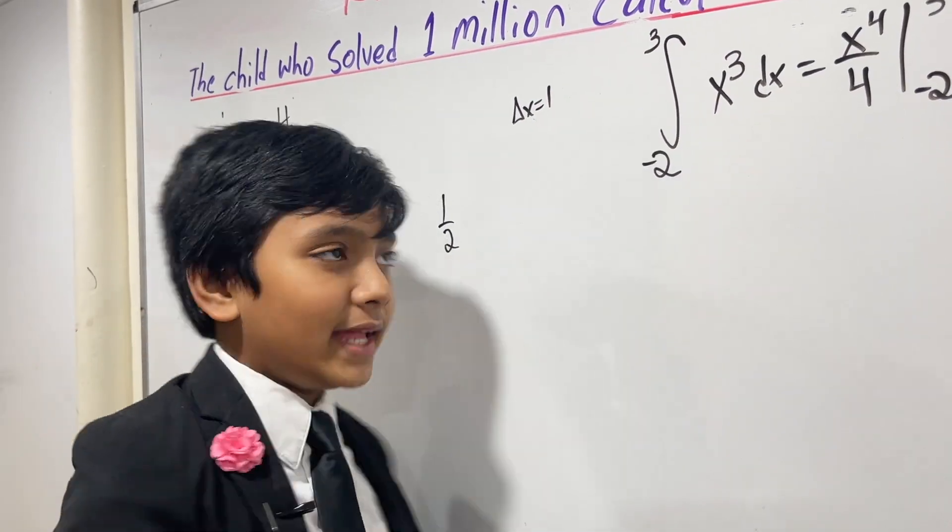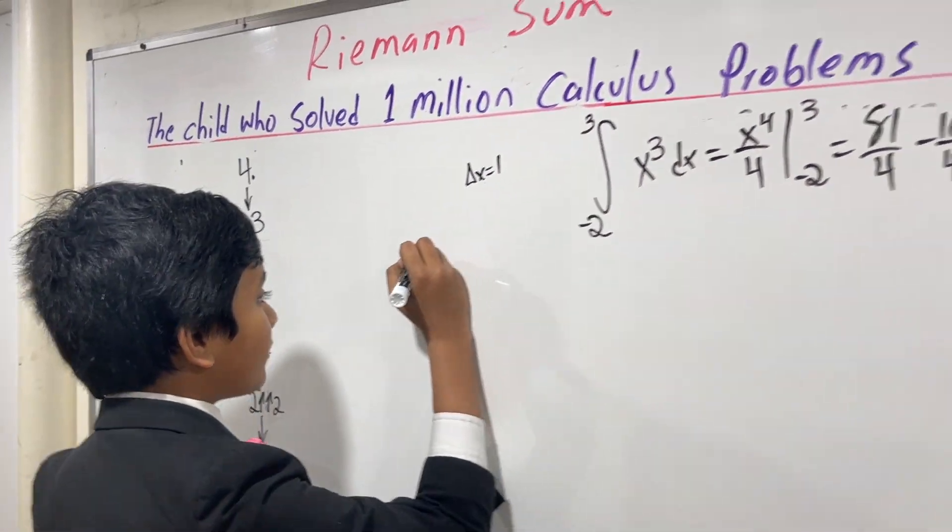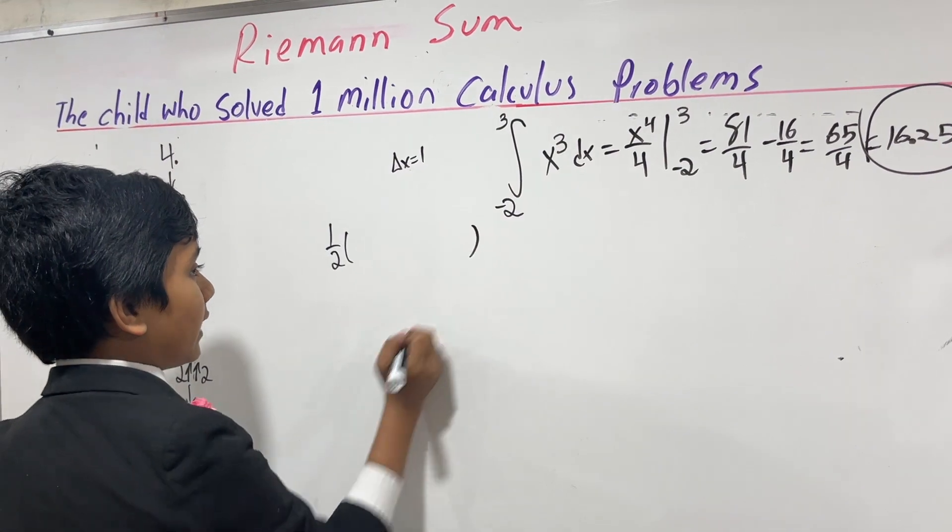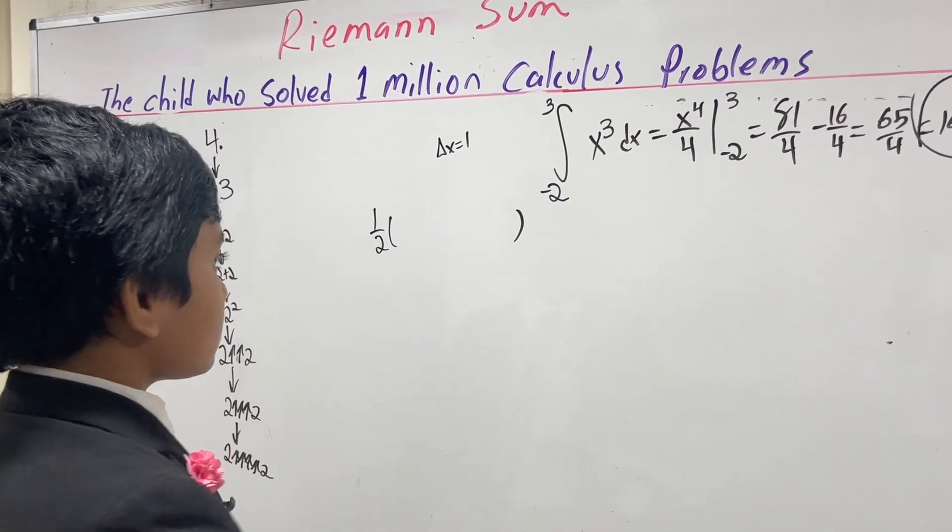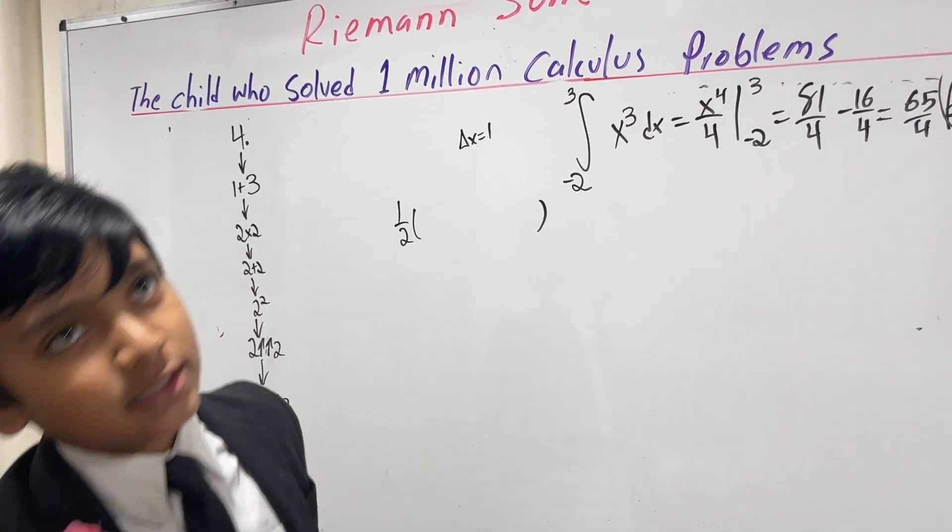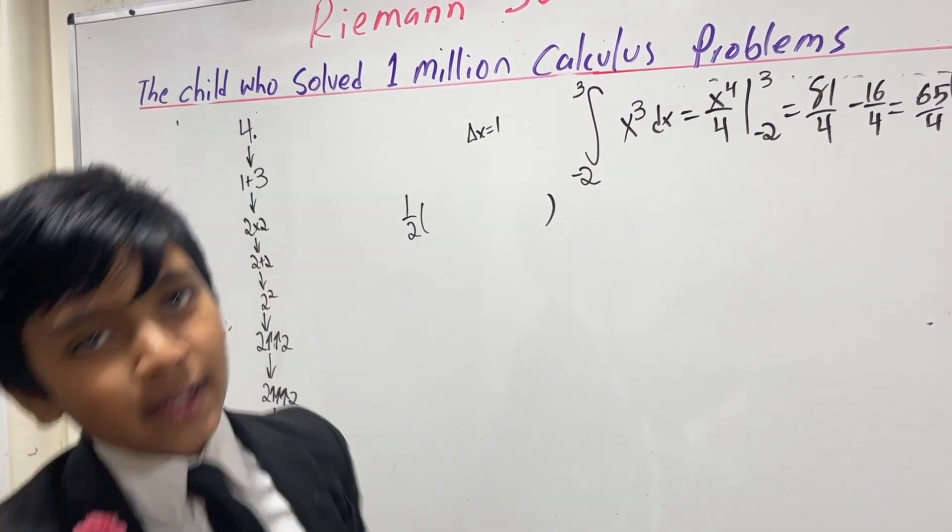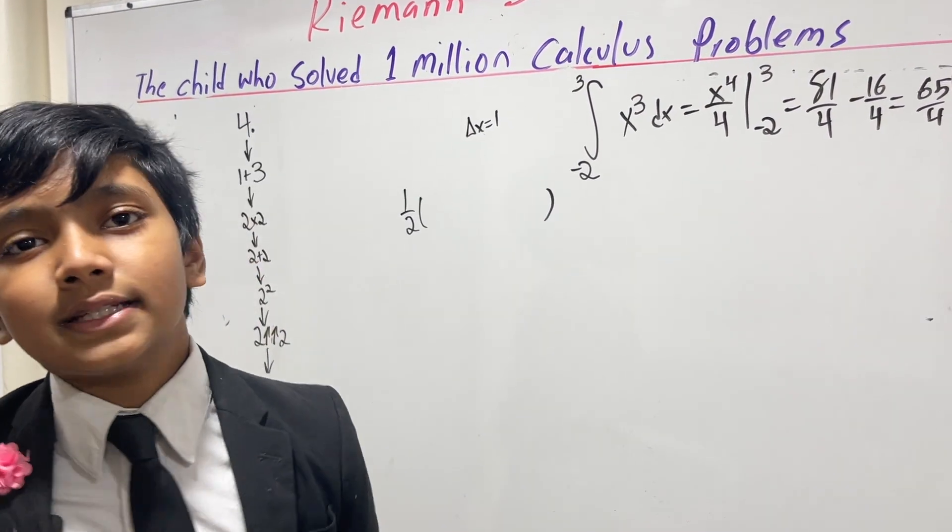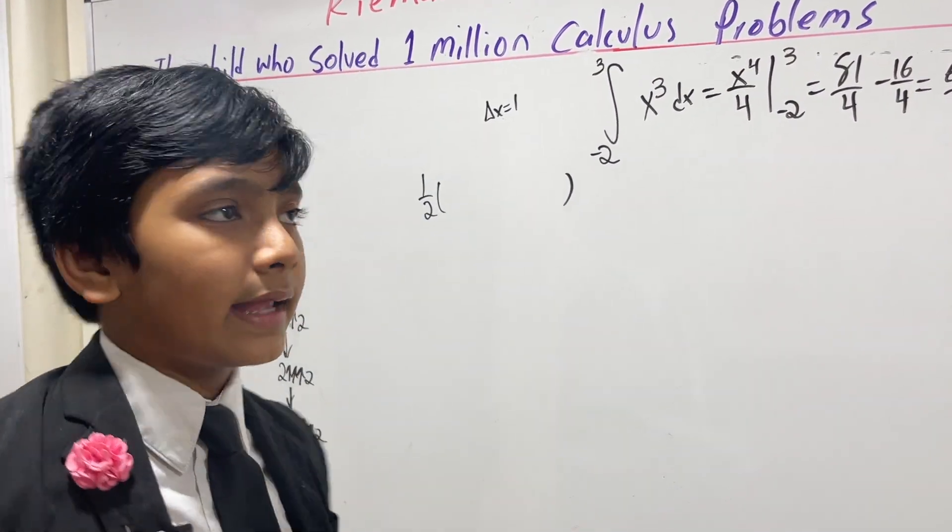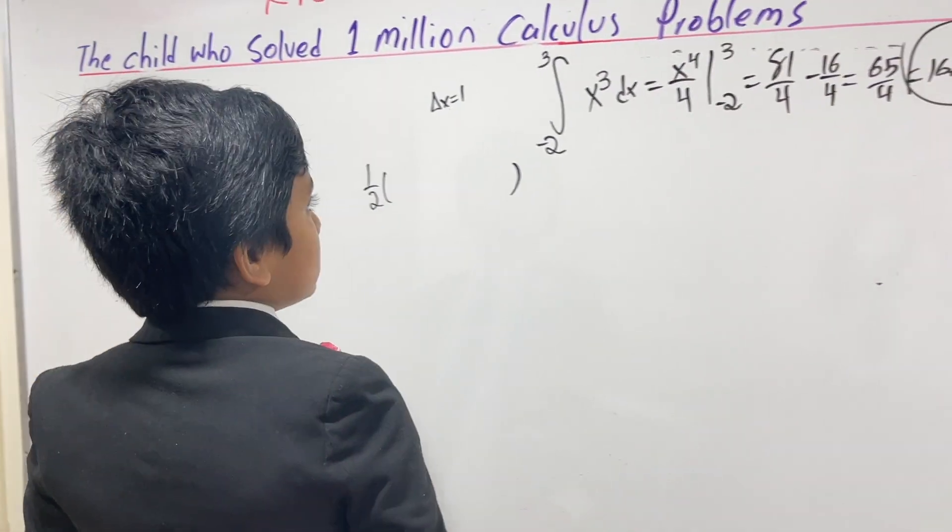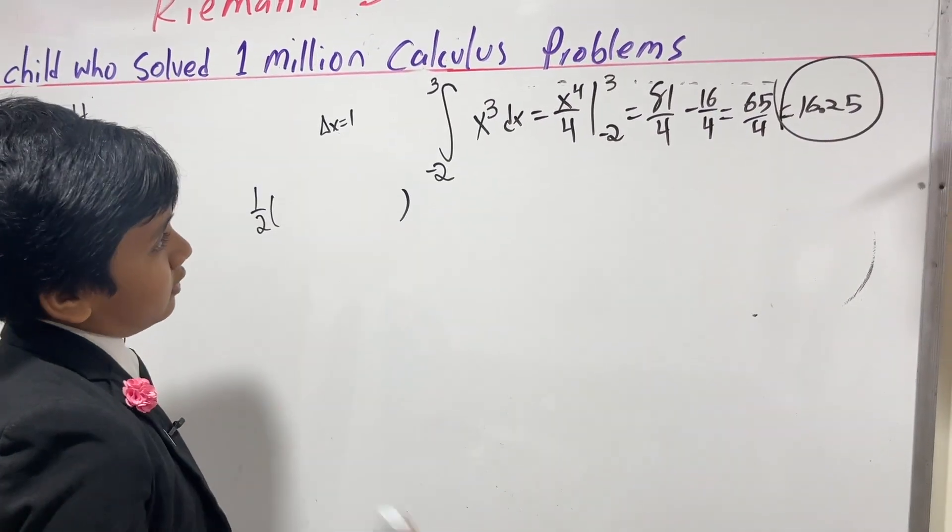Okay, so we have one half Delta X— sorry I didn't put this there, but Delta X is one— we're using these intervals. So one half times one, but we don't really need to write that, times f of x0 plus f of x1 plus f of x1 plus f of x2 plus f of x2 plus f of x3 and so on. You probably get the point.